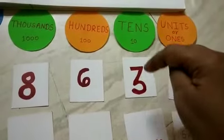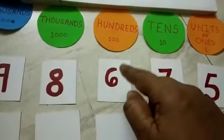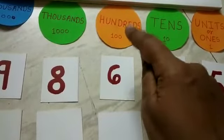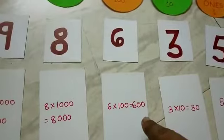3 is in tens house, so 3 multiplied by 10 gives you 30. 6 is in hundreds house, so value of hundreds is 100, so 6 multiplied by 100 gives you 600.